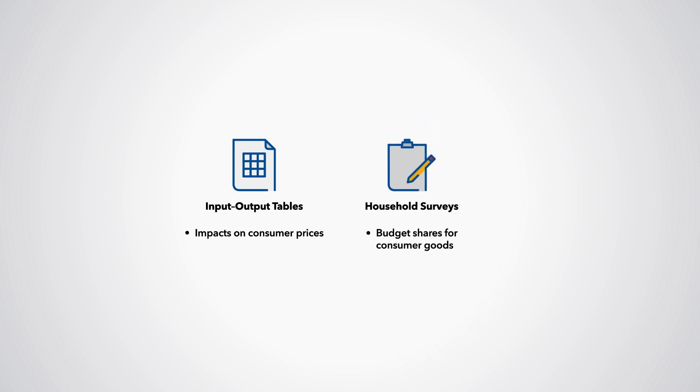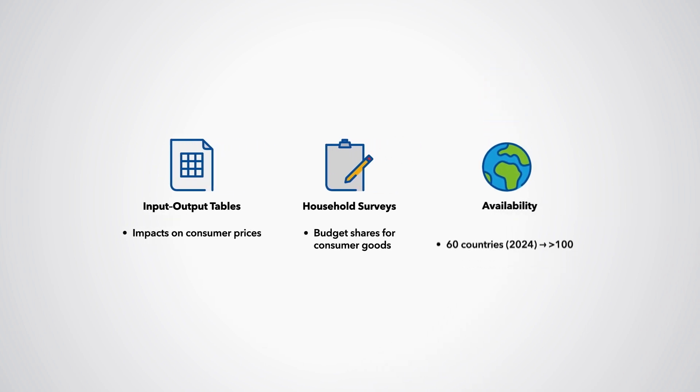These are then mapped to household budget surveys showing the budget shares of different goods for different household groups. We have incidence analyses available for over 60 countries and in time we hope to cover over 100. Our analyses project incidence impacts forward and account for behavioural responses to pricing. One caveat is that our standard assumption is full pass-through of carbon pricing into higher consumer prices. In practice, some of the burden may be passed backwards in lower producer prices, for example in industries that are price-takers in world markets.